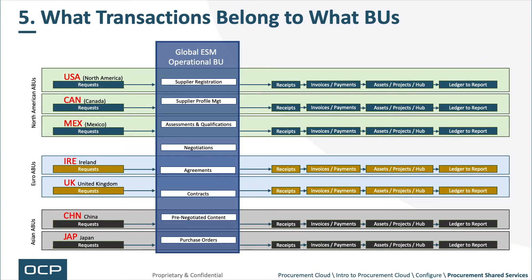Let's take a look at which transactions belong to which BUs. America has requisitions, receipts, invoice payments, assets, and projects all within their accounting business unit — the actual business unit for that country — versus a global supply management business unit that's operational in nature. That operational BU manages many transactions, but accounting can't belong to it; it has to remain with the accounting business unit, which is region-based. If you have different legal entities within your accounting business unit, you have a decision to make in terms of how requests get linked to different legal entities, how contracts belong to which legal entities, who is a primary, and who are the tertiary legal entities on contracts.